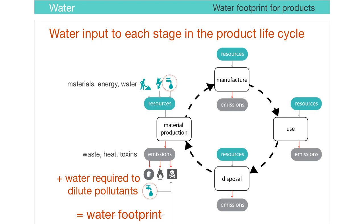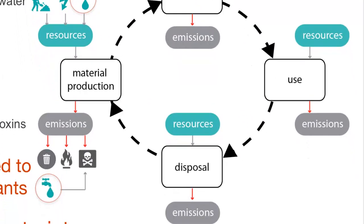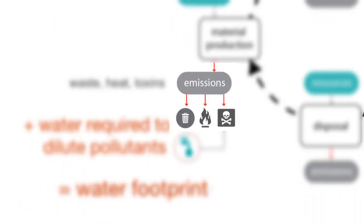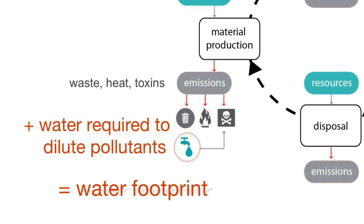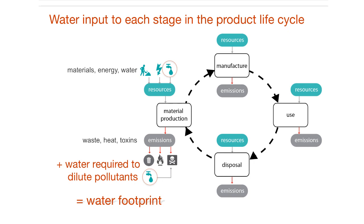The water footprint tool recognizes that all goods and services have a life cycle, and that at each stage of the life cycle, water is used as a resource and pollutants are emitted. In the water footprint model, volumes of freshwater are needed to dilute or assimilate the load of the pollutants to the natural background concentrations and existing ambient water quality standards. This volume of water required to dilute the pollutants to acceptable levels is called gray water.